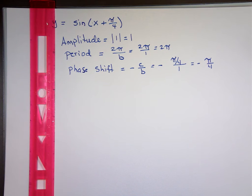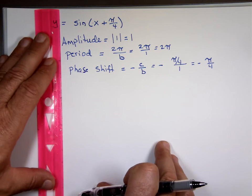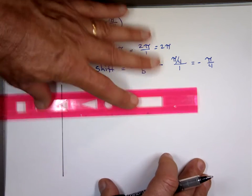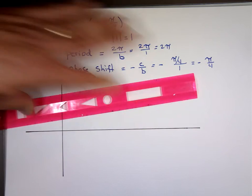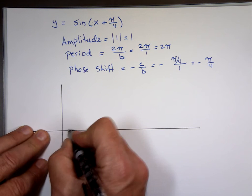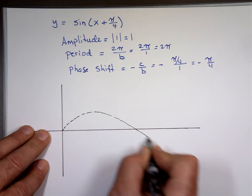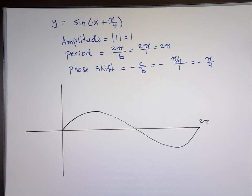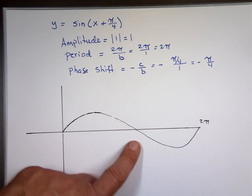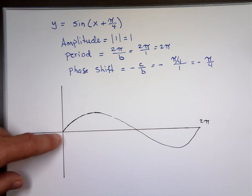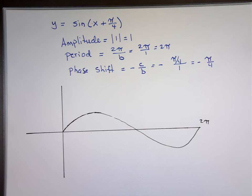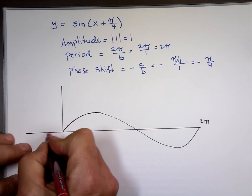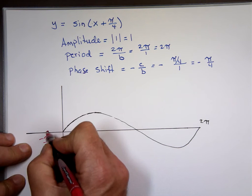So again, let me graph the basic sine function, then on top of it I'll put what our function will look like. This is the basic sine function — if I didn't have the shift, it would look like this. That's the 2π, right? But this one says my function is going to look just like this. It has an amplitude of 1, a period of 2π, but it does not start at 0. It starts at negative π over 4, so that's going to start on the left side — somewhere here.